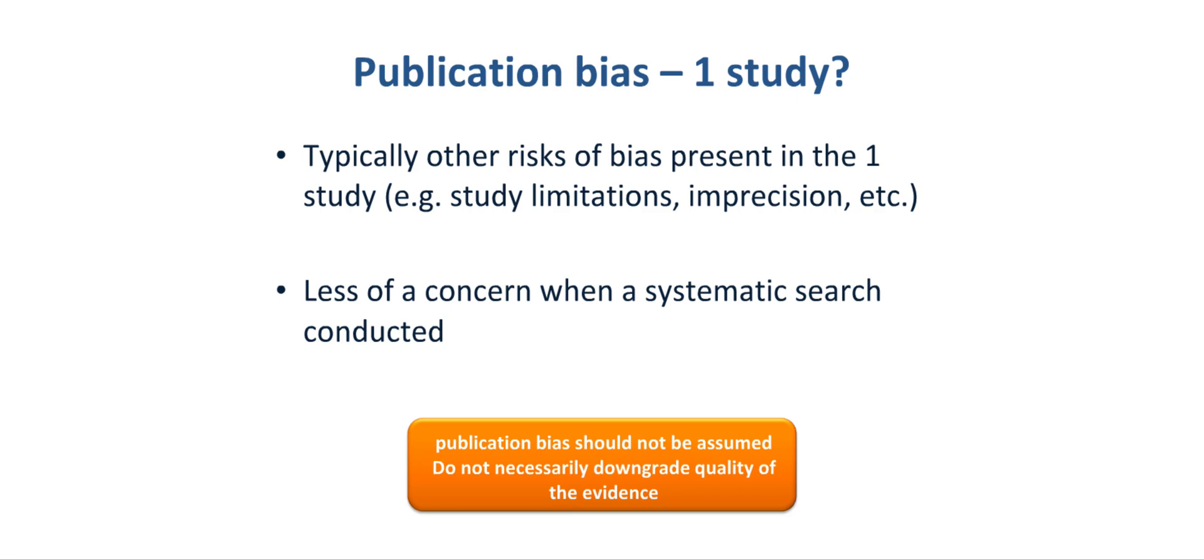A question that is frequently asked is whether publication bias should be suspected when there is only one study. The answer is that publication bias should always be suspected. All that one can do is to say whether it was detected or whether it remains largely undetected. However, typically, when only one randomized controlled trial is present, the quality of the body of evidence for a given outcome is likely to be downgraded, for instance, due to the risk of bias, imprecision, or other factors. Publication bias generally, when there is only one study found, is less of a concern when the search has been conducted well, in particular when a systematic search was actually done to eliminate the risk of not identifying studies. Publication bias based on one study should therefore not be assumed by default.